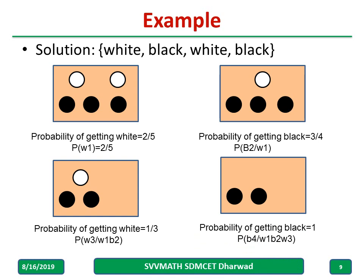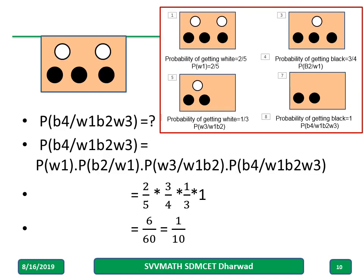Now combining all these individual probabilities, the probability of getting white, black, white, black in order is obtained by multiplying all: 2 by 5, times 3 by 4, times 1 by 3, times 1.